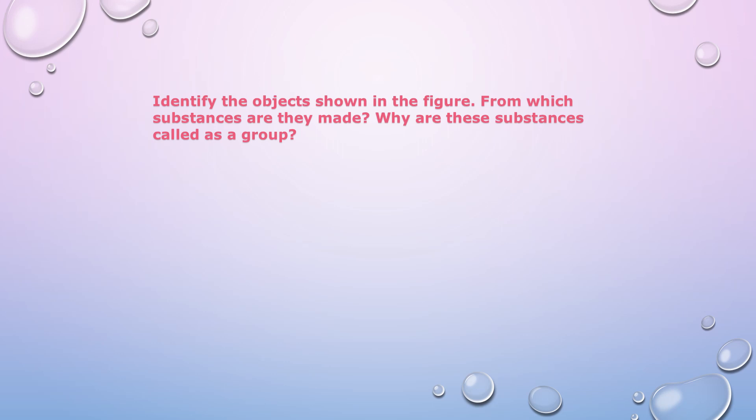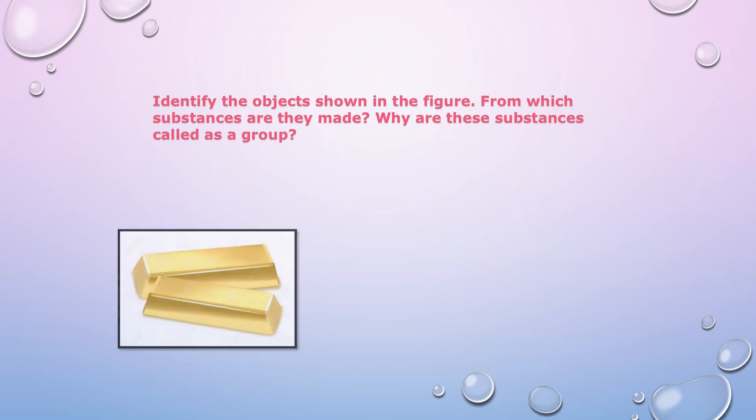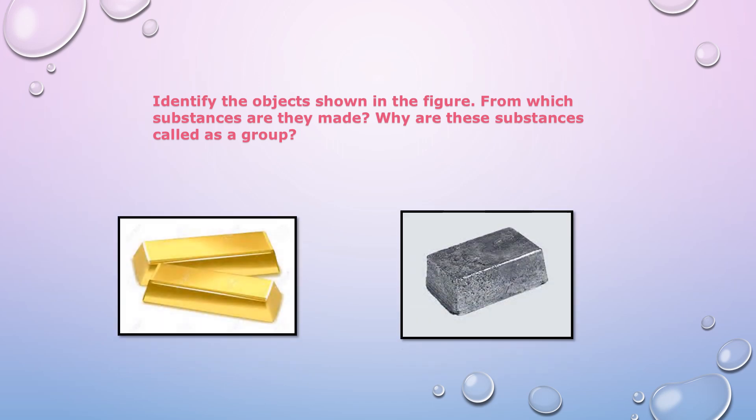Now, identify the objects shown in the figure. From which substances are they made, and why are these substances called a group? These articles are made up of metals such as gold, silver, and iron. The group of these substances is known as metals. Metals are found in the form of minerals deep down in the earth's crust, and minerals are further processed to obtain metals.